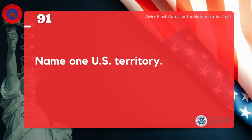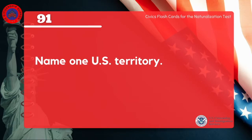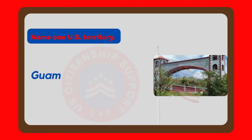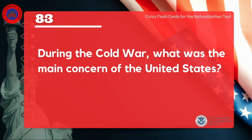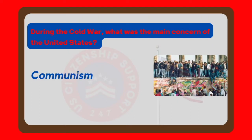Name one U.S. territory. Guam. During the Cold War, what was the main concern of the United States? Communism.